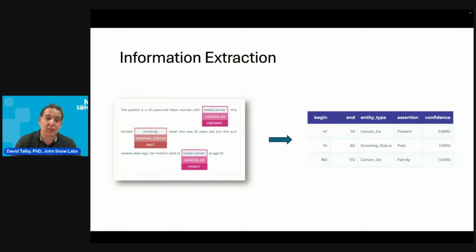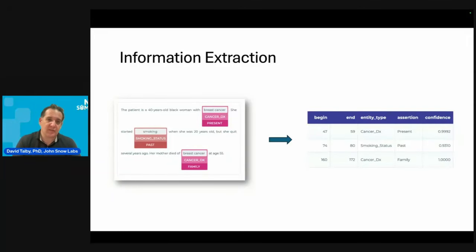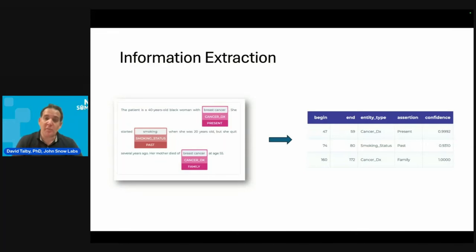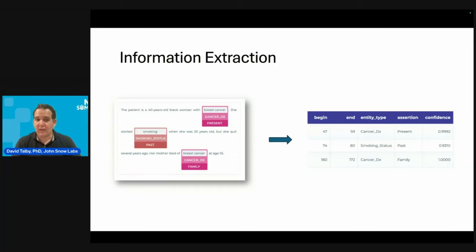Information extraction, especially from unstructured data, means that we read it carefully. There's a difference between 'this is a woman with breast cancer' versus 'this is a woman without breast cancer,' or 'this is a woman with suspected breast cancer,' or 'her mother had breast cancer when she was 55.' Those are completely different assertions, even if the same term was extracted.